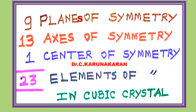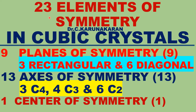In cubic crystal system, there are nine planes of symmetry, thirteen axes of symmetry, and one center of symmetry. Therefore, there are 23 elements of symmetry present in cubic crystal. The total number of symmetry operations present in a cubic crystal is called elements of symmetry. This slide summarizes all 23 elements of symmetry present in cubic crystals. Thank you for watching.